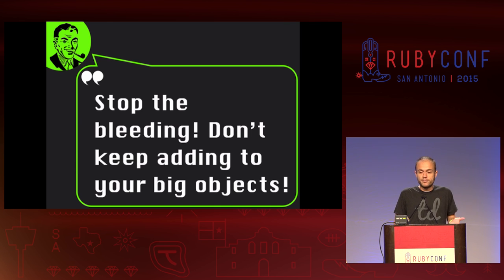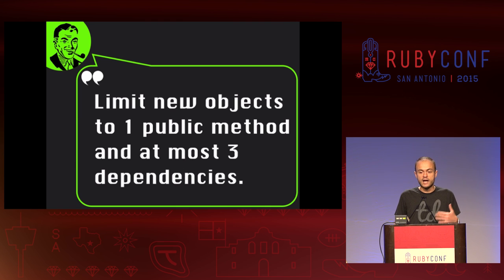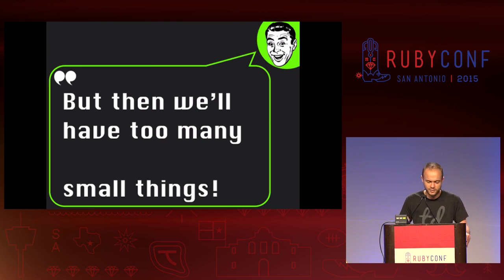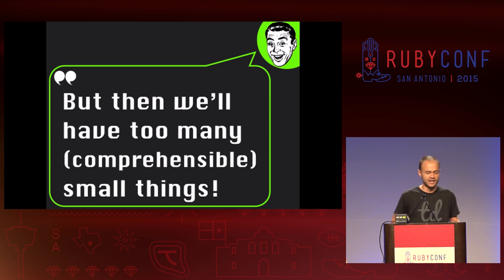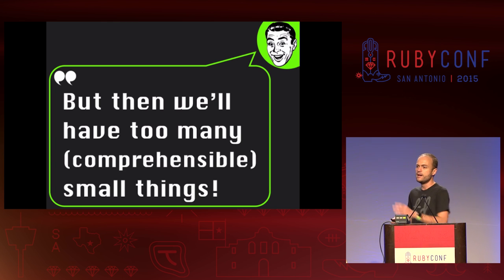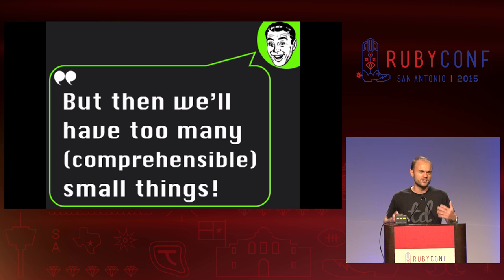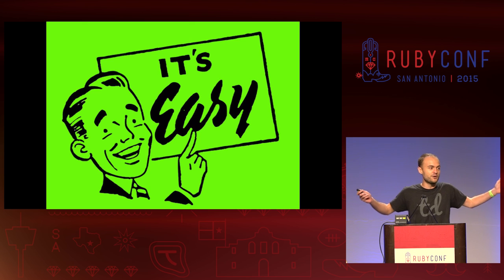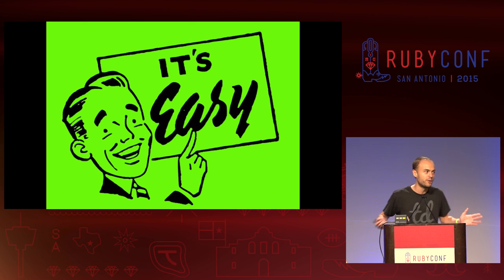A lot of teams who are used to big objects want to get serious about testing, and then they're like, 'wow, this is really hard. I quit.' So if you want to get serious about testing, stop the bleeding. Don't keep adding on to your big objects. I try to limit new objects to one public method and at most three dependencies — which, to that particular audience, is shocking. The first thing they all say is, 'but then we'll have too many small things, how will we deal with all the well-organized, carefully named, comprehensible small things?' People get off on their own complexity — they think that's what makes them a serious developer. I say: it is easy mode. Just write small stuff. It works.